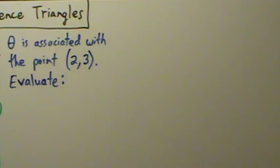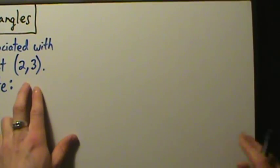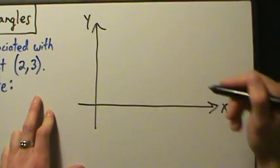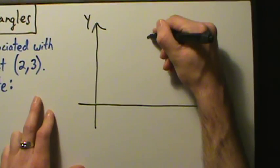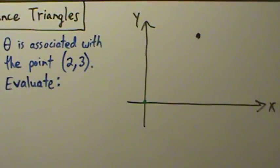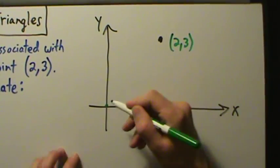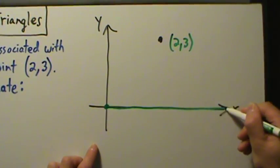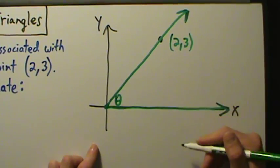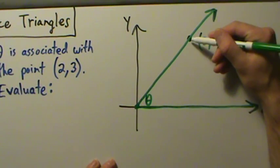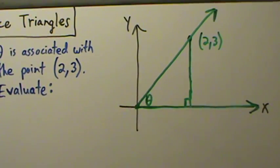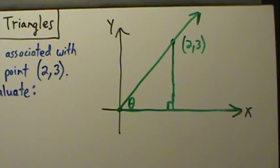The first thing we want to do is plot the point (2, 3). Let's make an x-axis and a y-axis. The point (2, 3) is in the first quadrant. Since theta is associated with this point, the vertex is at the origin, the initial side is on the positive x-axis, and the terminal side goes through this point — that's our angle theta. Now, from the point (2, 3), we drop a perpendicular down to the x-axis, and we form this triangle here. This is our reference triangle.